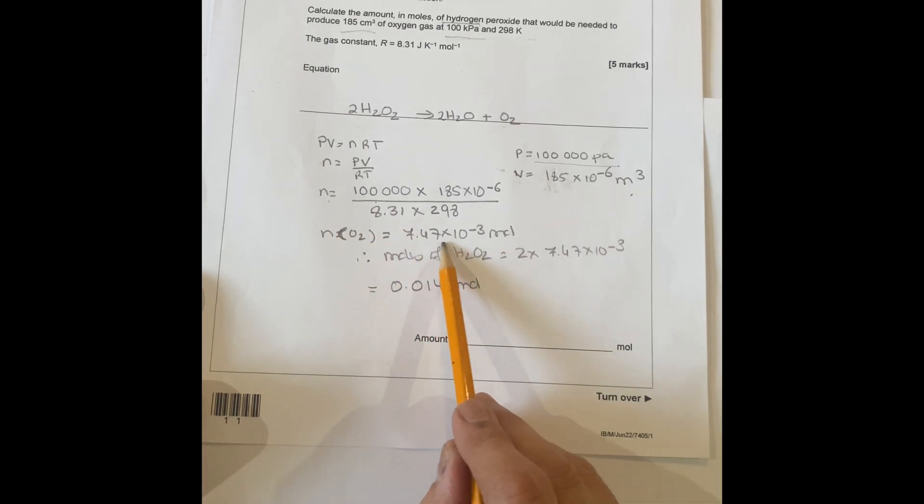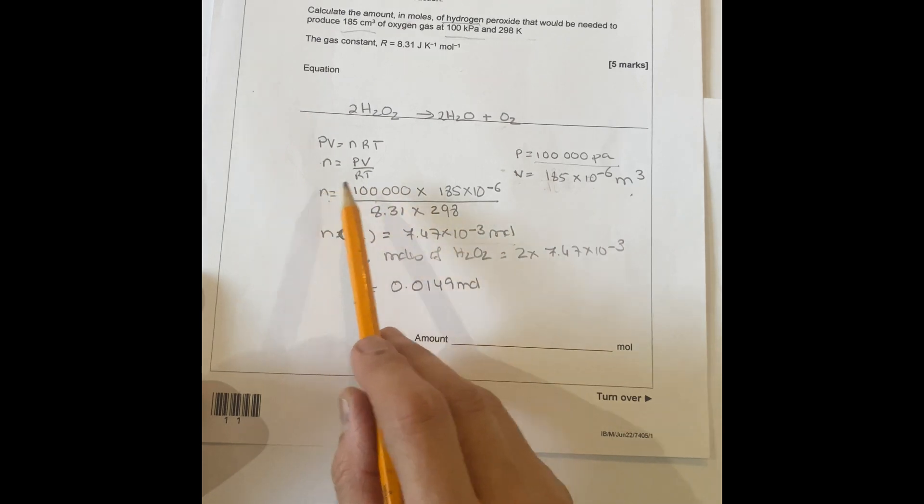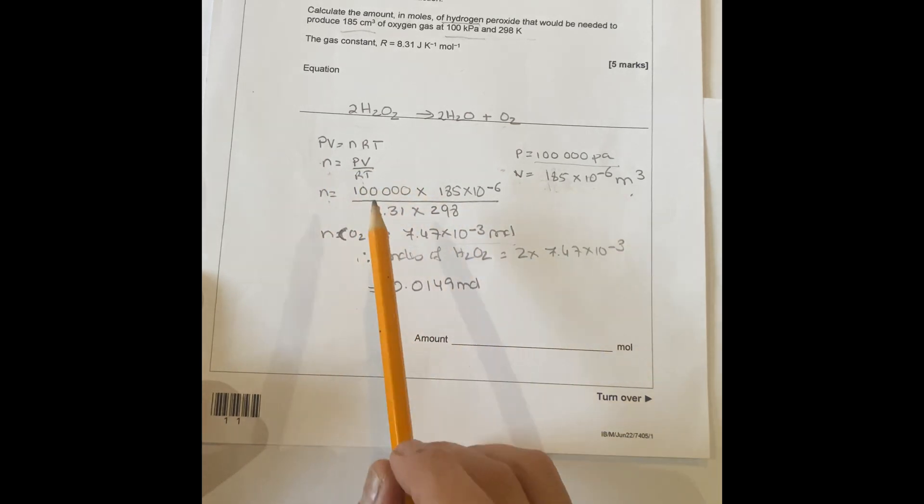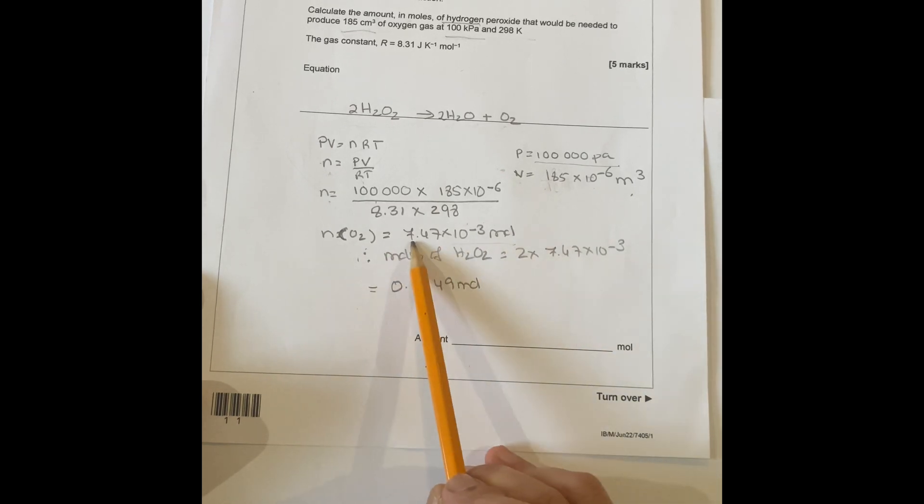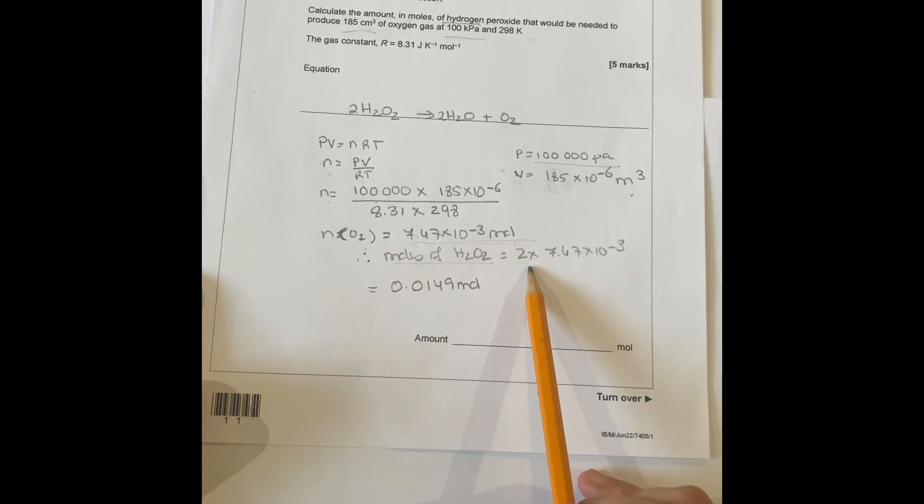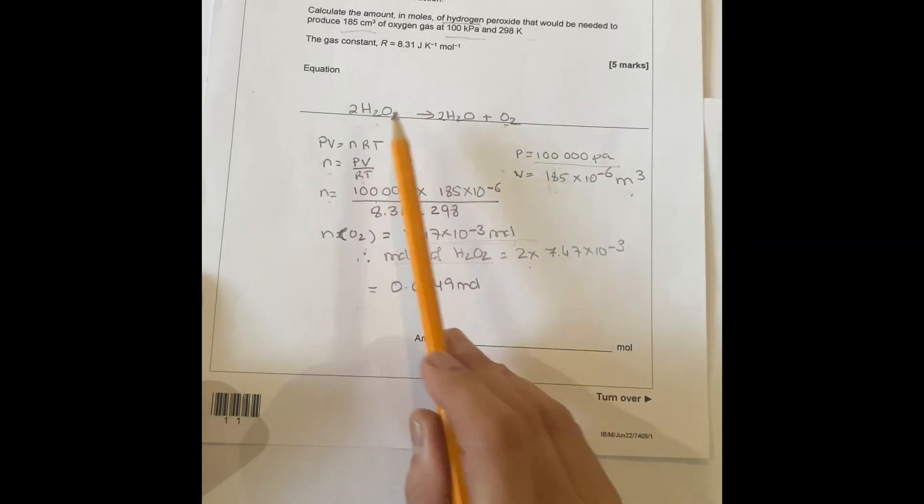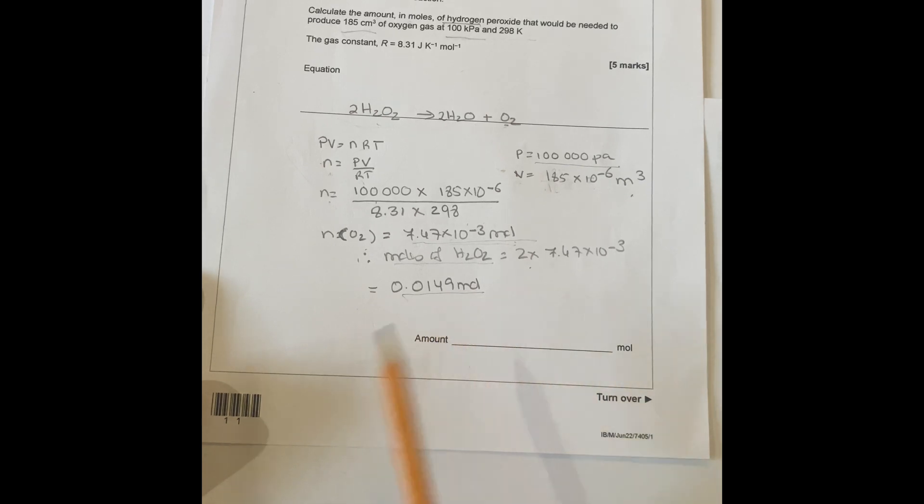That gives you moles of oxygen. Rearrange to find moles which is PV divided by RT, you place the figures in there, then it gives you the moles of O2, 7.47 times 10^-3 moles. Moles of hydrogen peroxide is going to be twice as much because you've got oxygen here, the ratio is one to two. So moles of peroxide is going to be 0.0149 moles.